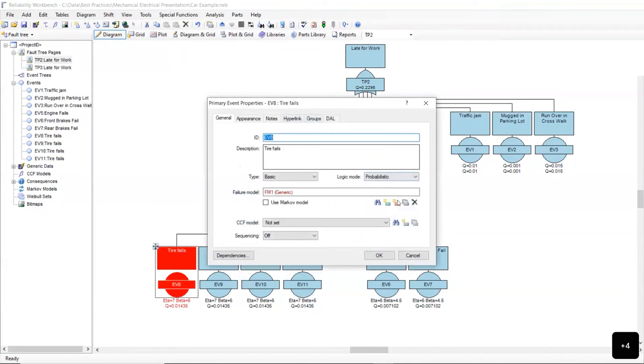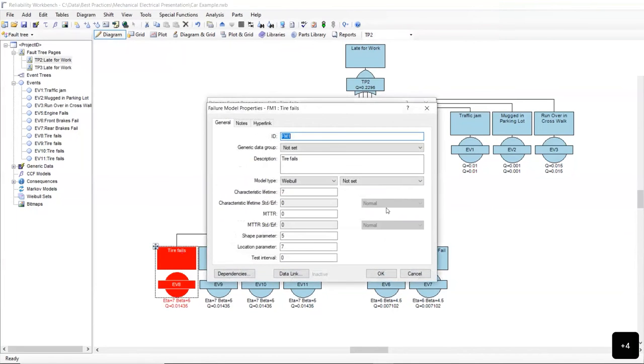I'd go back to my tires failing. And I did not enter a test interval here because I'm saying I use this car every day, more than once a day. So it's used fairly regularly. So the dormant Weibull equation is not appropriate here. It's the non dormant. But in doing so, I also should have entered a mean time to repair.